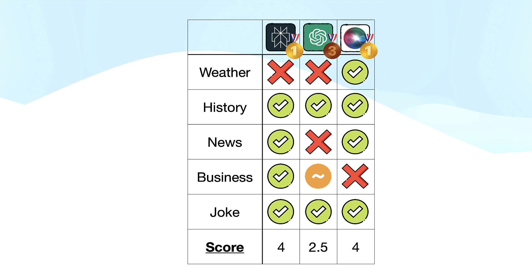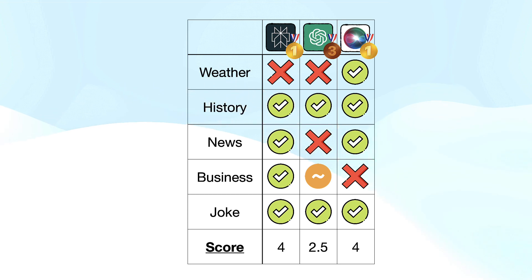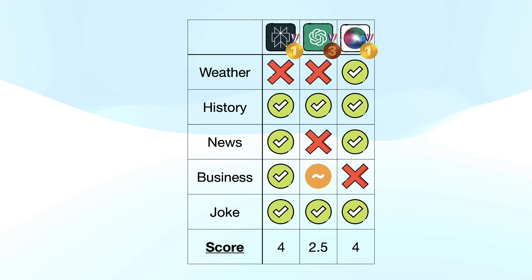The strength of Perplexity compared to the other two is that it can directly access the internet and give much more detailed information, whereas ChatGPT has no internet access at all, and Siri will just provide you a few more or less random links that might have something to do with what you're looking for.